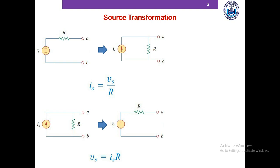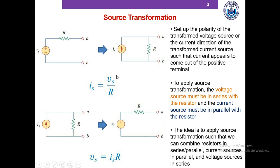There are several points to consider for source transformation. First, we set up the polarity of the transformed voltage source or the current direction of the transformed current source such that the current appears to come out of the positive terminal of the voltage source. For example, when converting a voltage source to a current source, the current direction is set upwards, matching the direction current would exit the positive terminal. Also, to apply source transformation, the voltage source must be in series with the resistor, or the current source must be in parallel with the resistor. For any other combinations, we cannot apply source transformation.